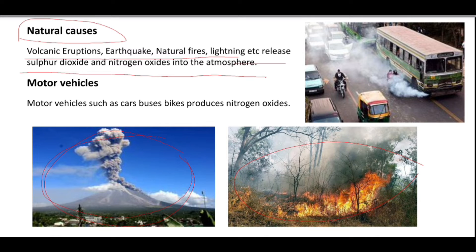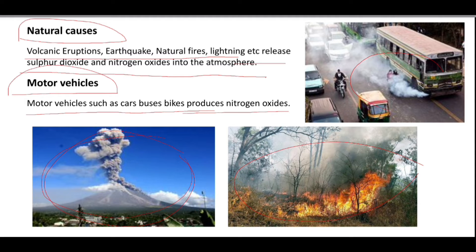Motor vehicles such as cars, buses, and bikes also produce nitrogen oxides. Buses and vehicles release gases containing nitrogen oxides, which are a cause of acid rain.